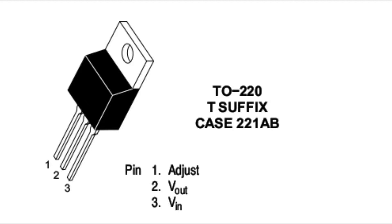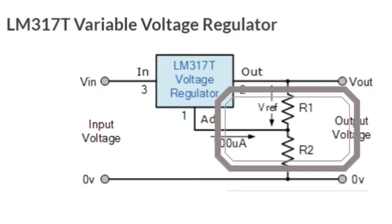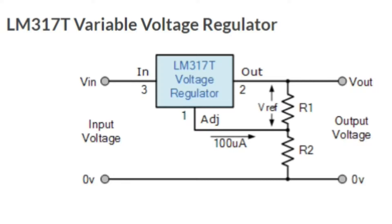The output voltage of the LM317 is determined by the ratio of two resistors, R1 and R2, which form a potential divider network across the output terminal. The voltage across the feedback resistor R1 is a constant 1.25 volt reference voltage.